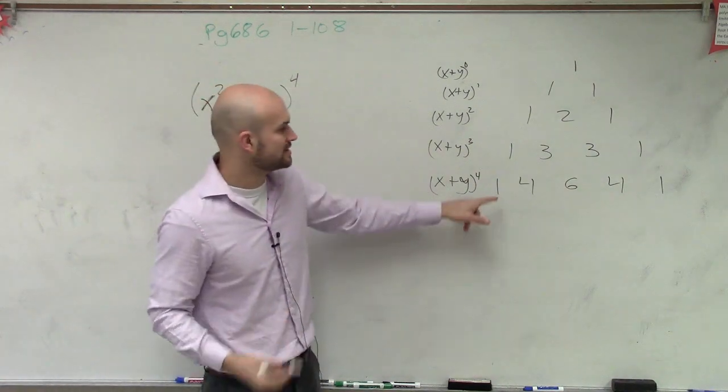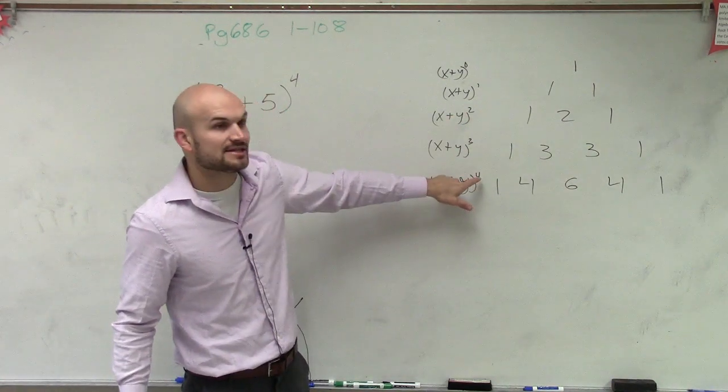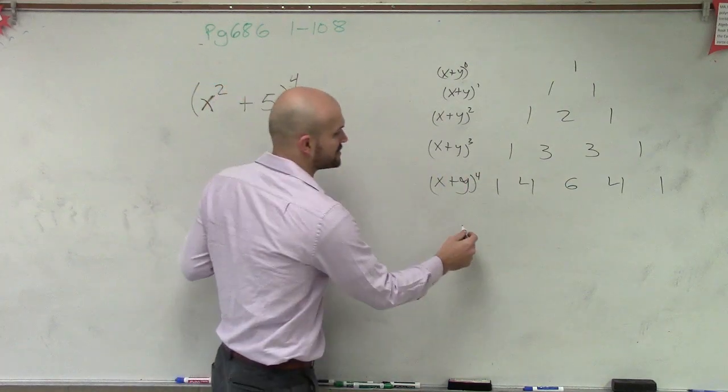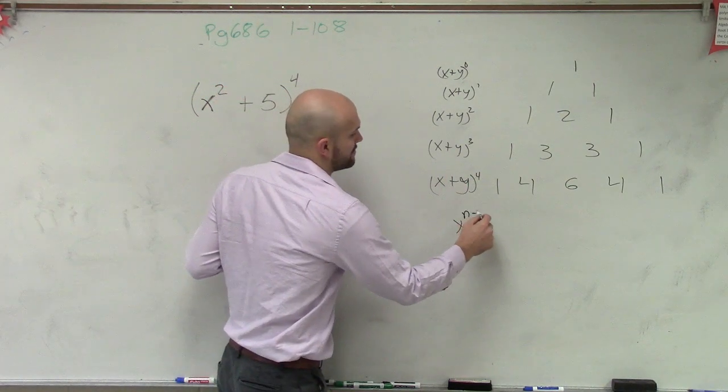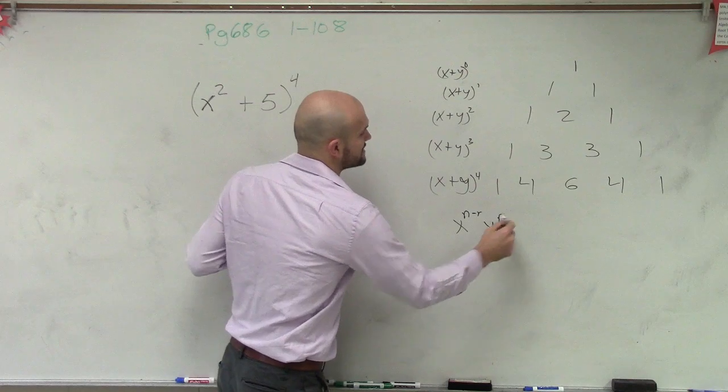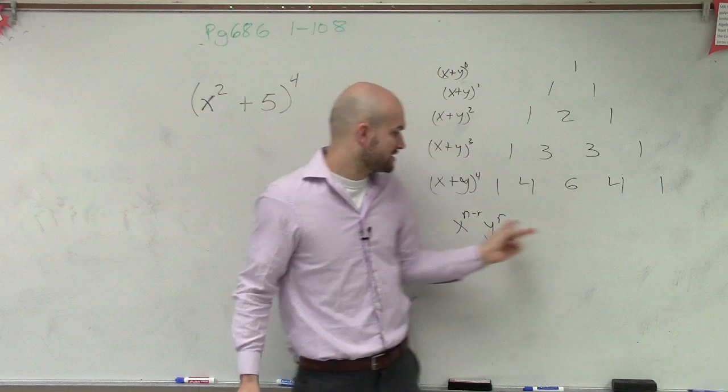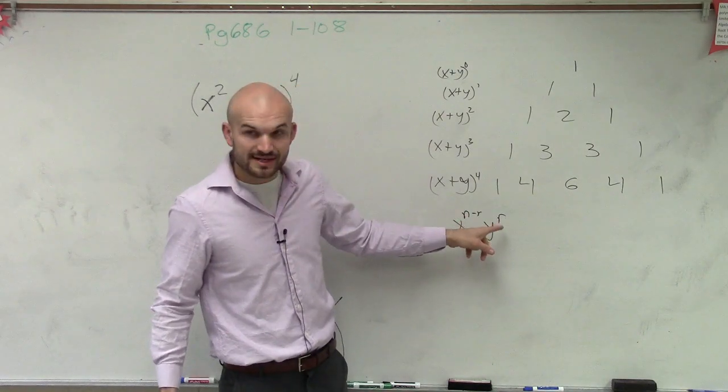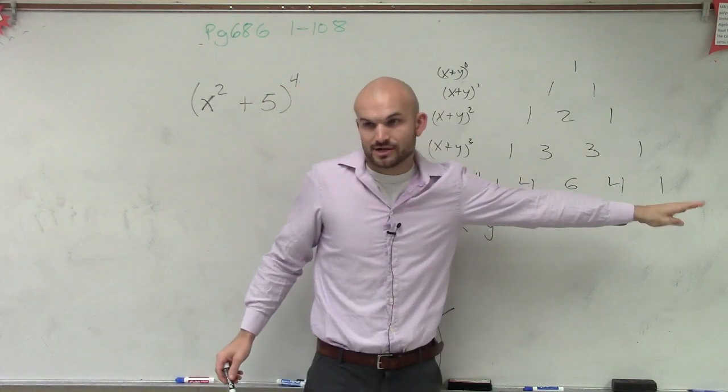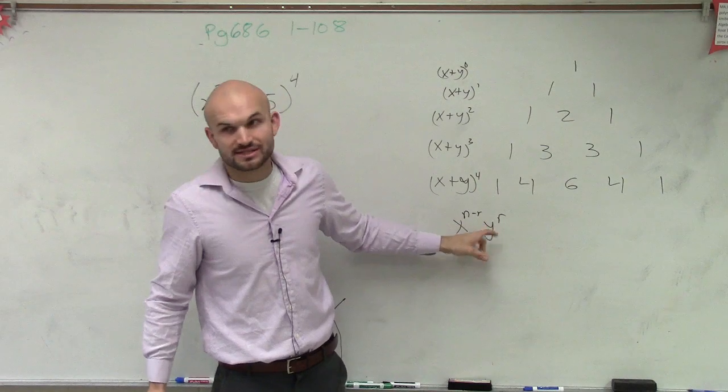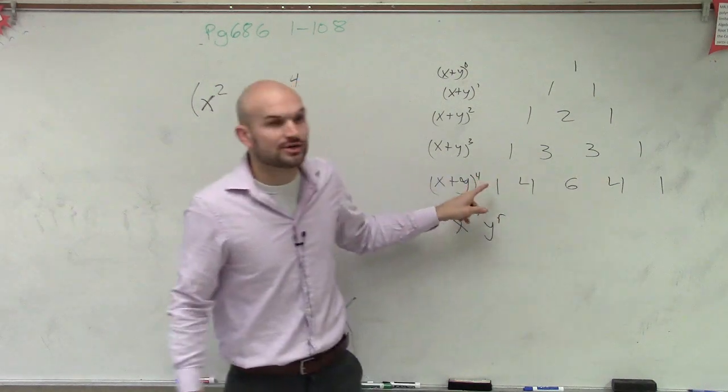And the next thing we also learned is remember that we start at your degree. This was your n, right? And every term can be written as x to the n minus r times y to the r, where your degree of your first term goes down in descending order. It starts at n where r is 0, and then goes all the way down to 0. And your r starts at 0 and then ascends all the way up to your higher degree.